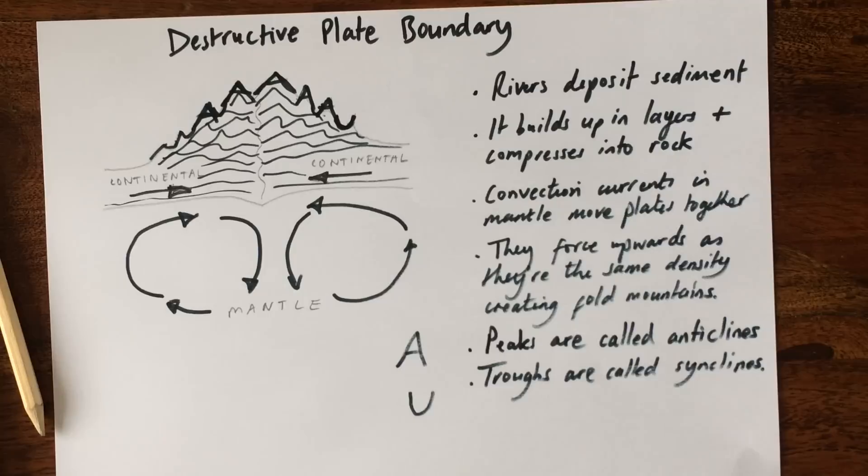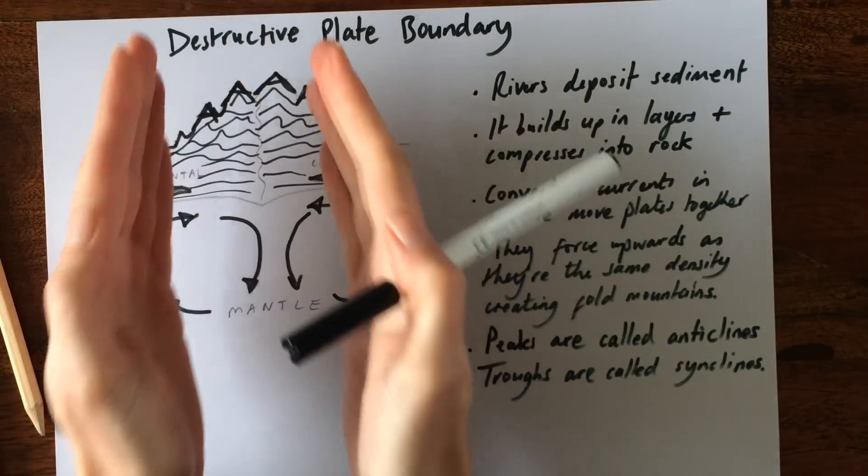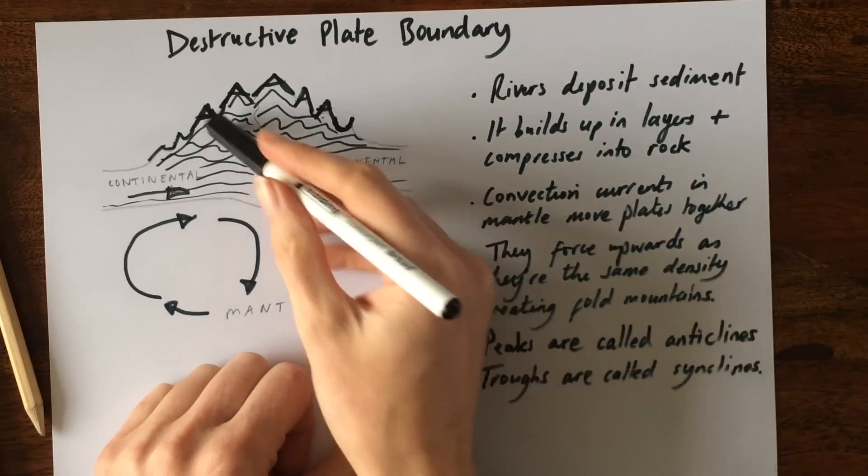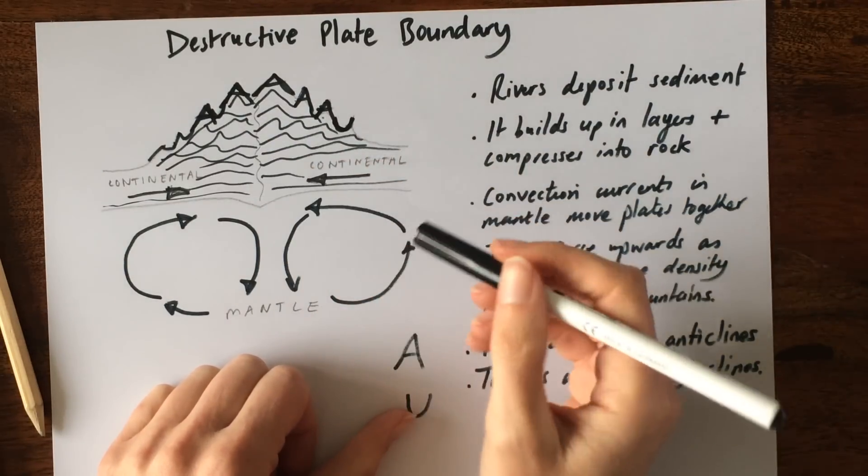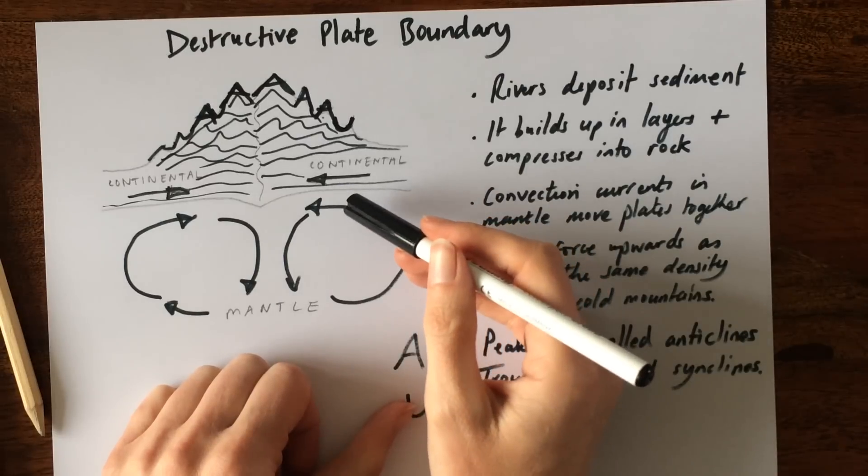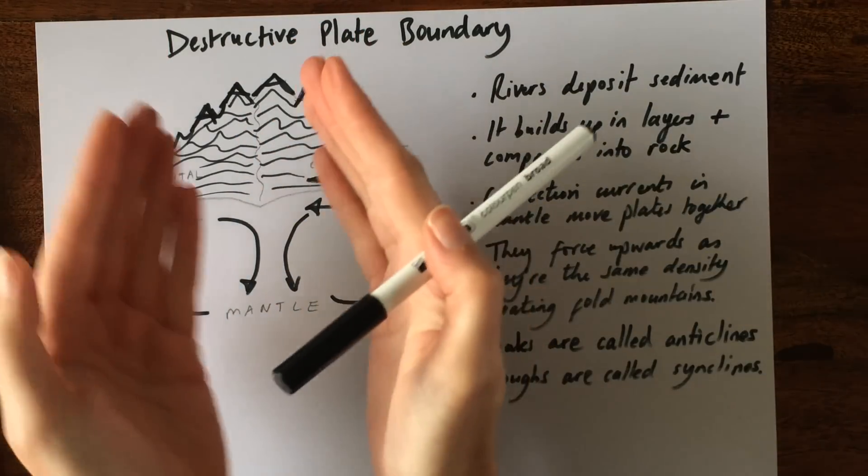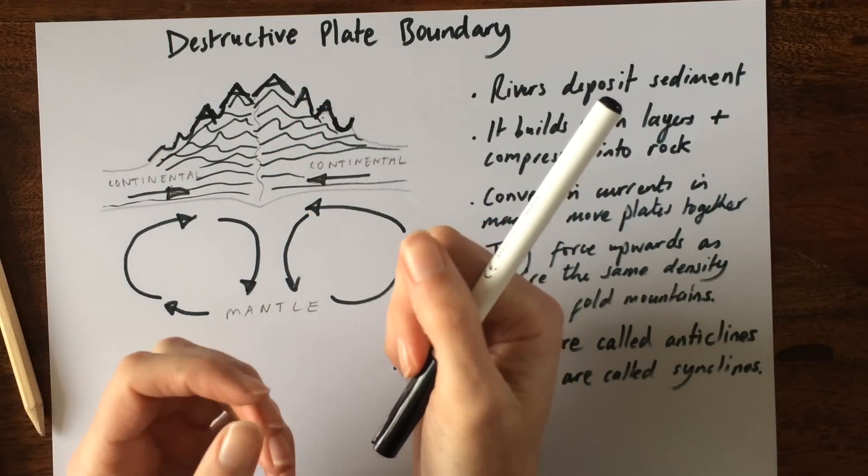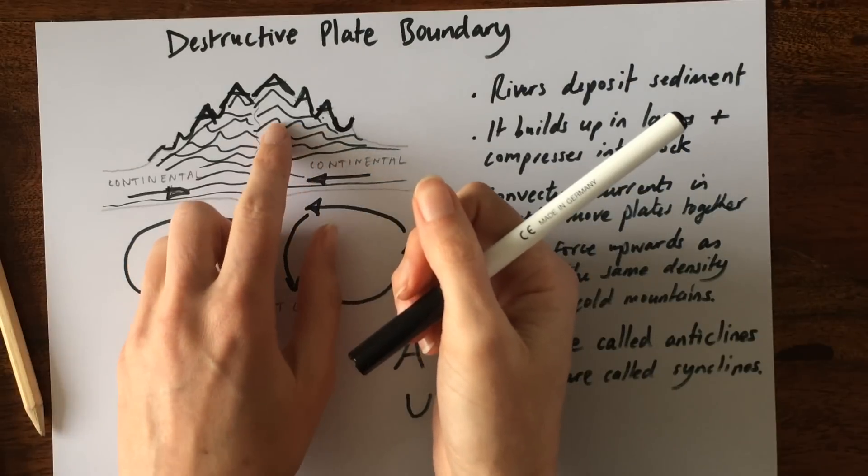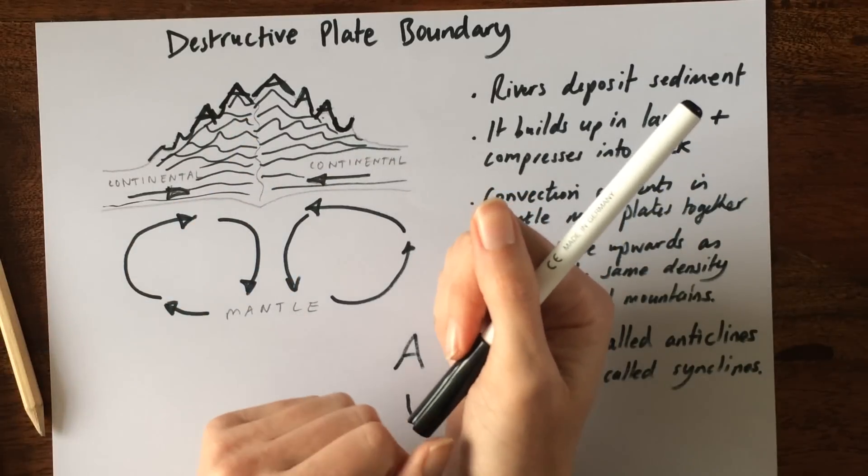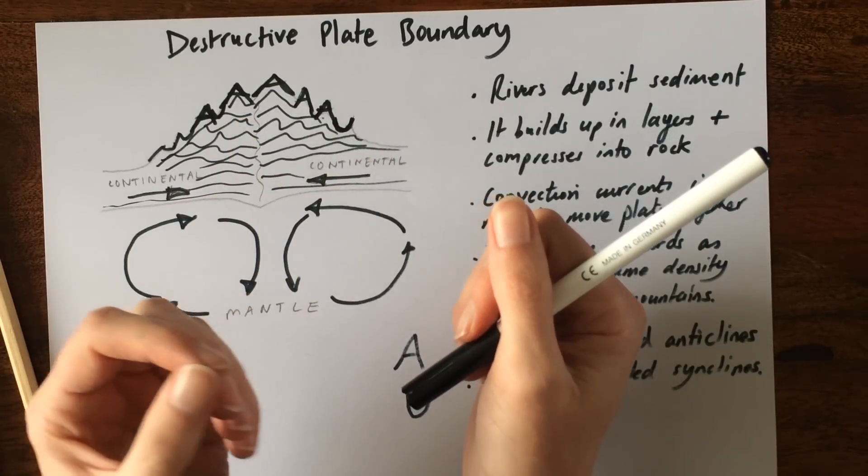Last couple of things to say about this boundary. You will not get any volcanoes here. You only get mountain building because the rock is simply being squeezed together and folded upwards. There is no magma coming up through this mountain range, so you will not get any volcanoes. You will get some earthquake activity because as the rock is being compressed and it's moving and the mountains are growing taller and taller, the layers between the different sedimentary rocks will slip and slide slightly, and that will create earthquakes.